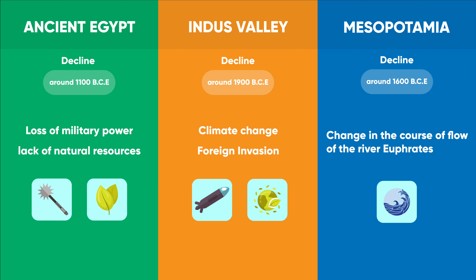Historians have quite a few theories about how the Mesopotamian civilization declined. They believed that the decline was mainly due to the change in the course of flow of the river Euphrates. This was coupled by the chaos created in 1600 BC when the Hittites invaded Mesopotamia.